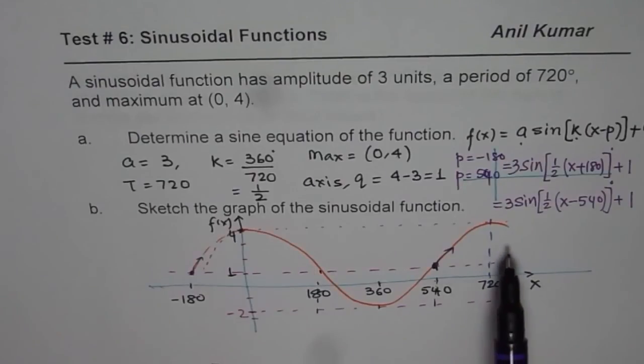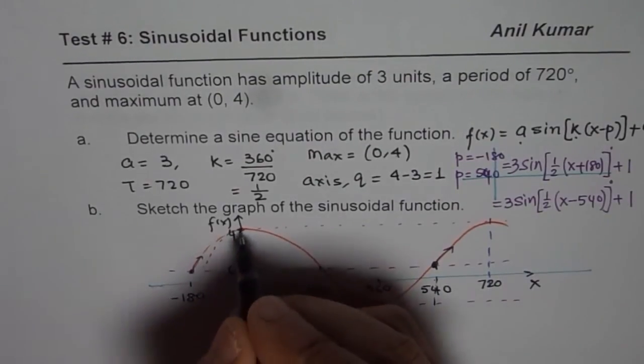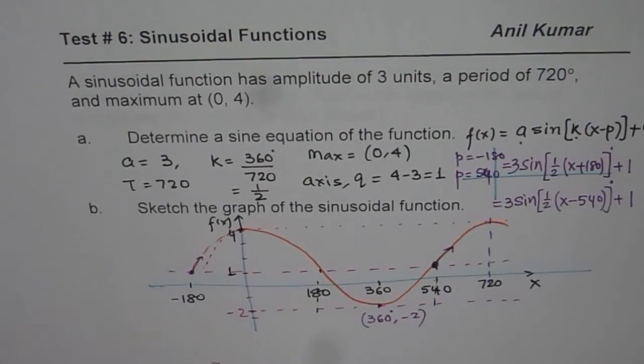This is how you can graph it. I hope you understand and appreciate what we did to get absolutely right answer. It is also a good thing to write these points very clearly. This point is 360 degrees and the y value is minus 2. I hope that helps. Thank you and all the best.